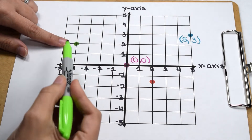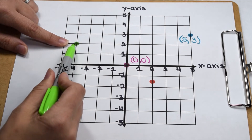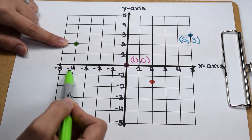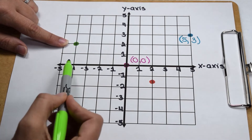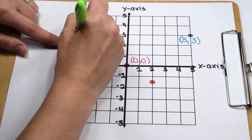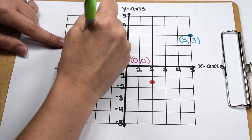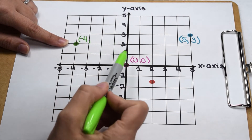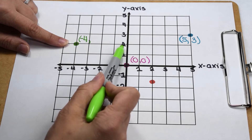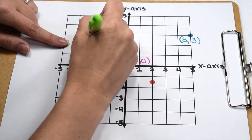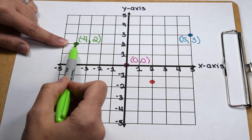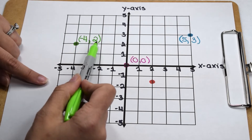Coming around to quadrant 2, we can determine the location of this point. When we check its x-coordinate first, we notice we're to the left of the origin, so our x-value is going to be negative. We notice our point lines up at negative 4, so in our ordered pair our x-coordinate is going to be negative 4. We can check to see where it lines up on the y-axis. We notice that we're above the origin, so our y-value is going to be positive. Our point lines up with the 2, so positive 2 is going to be the y-coordinate. The ordered pair that best represents this point is (-4,2).